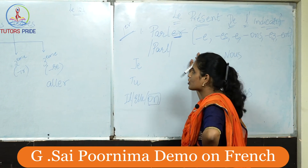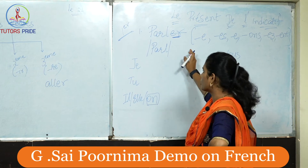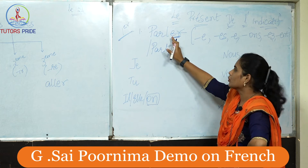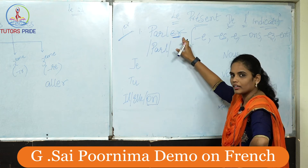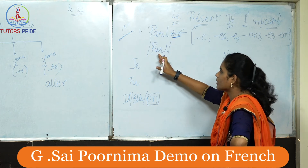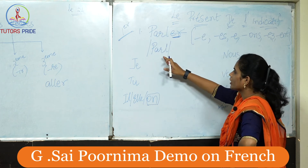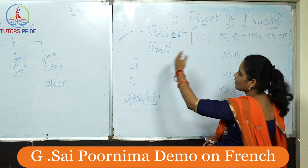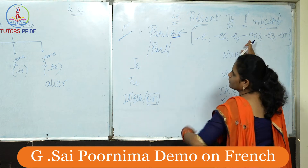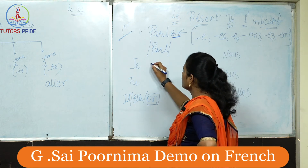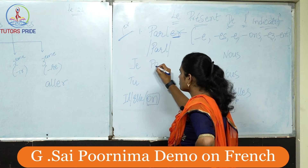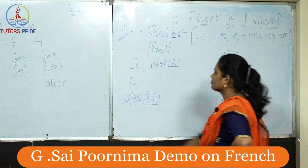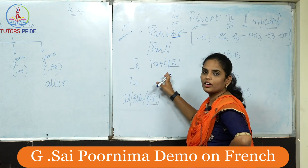So let us see the conjugation. For first group verb conjugation, remember we eliminate the last two letters ER and the stem becomes 'parle'. According to the subject we have these endings, so we have the stem and we add the endings accordingly.